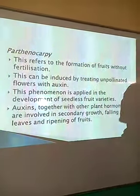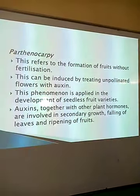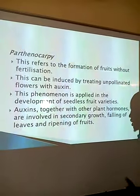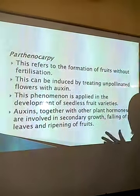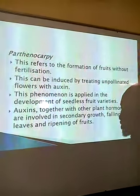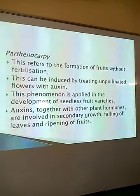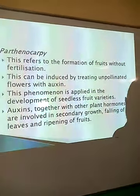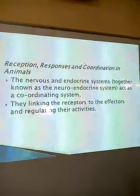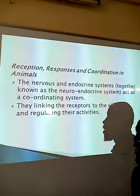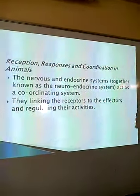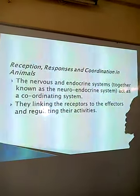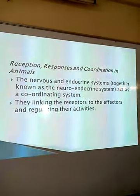Auxins, together with other plant hormones, are involved in secondary processes such as the falling of leaves and the ripening of fruits. Other hormones include gibberellins, cytokinins, and ethylene, which are all involved in the production of fruits. Having seen how reception, response, and coordination occur in plants, we now want to see how it takes place in animals.